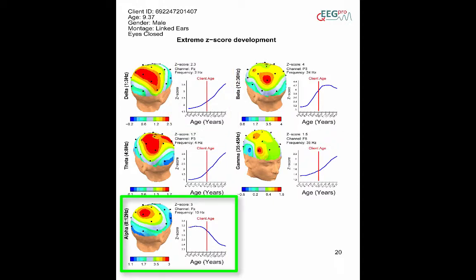On the other hand, this client also has an excess in parietal alpha power, which is depicted at the bottom left corner. The age progression at this z-score shows the opposite pattern.